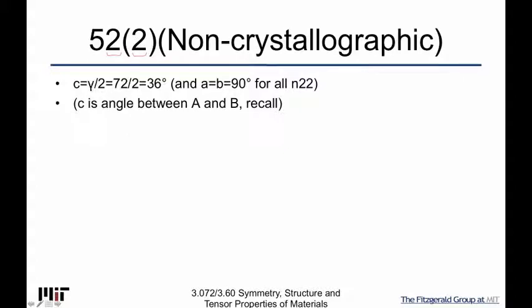So here, notice that if I have a pentagon, it's 360 divided by 5, so point to point this is 72 degrees, so gamma is 72. It's 360 divided by 5.